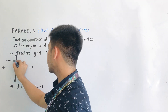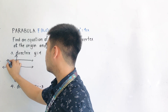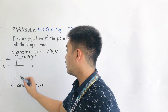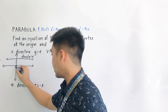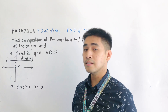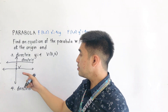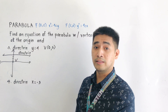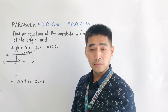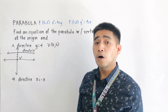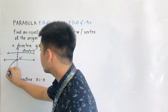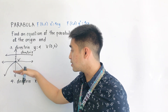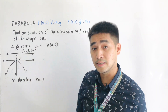This is now our directrix, y is equal to 4. This is our vertex. We can see that the axis of our parabola should be going up or going downward. But the directrix is above the vertex, therefore our parabola should open downward. This is our parabola opening downward because this is the directrix, this is the vertex, and somewhere below the vertex is the focus.